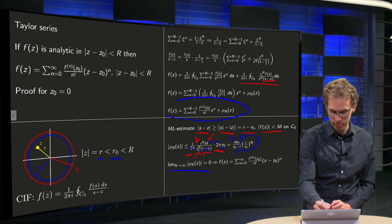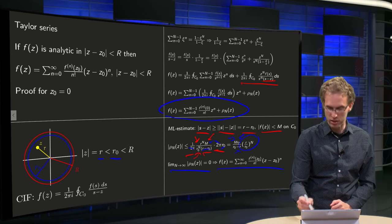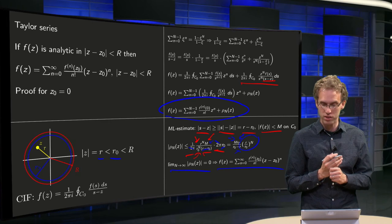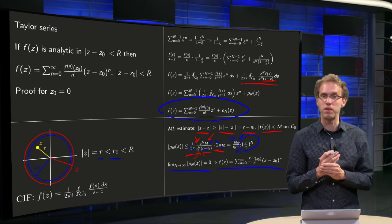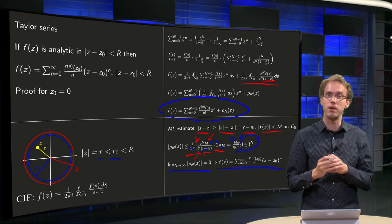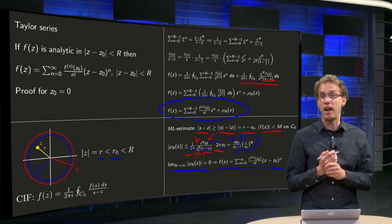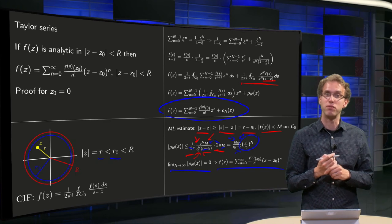We get f of z equals sum n to infinity, nth derivative in z₀ over n factorial, times z minus z₀ to the power N for arbitrary z₀.